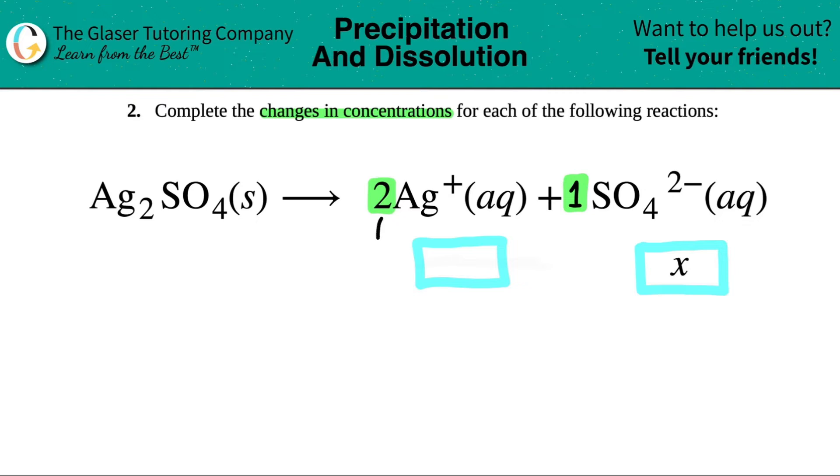But for the Ag, since it's a two to one ratio, the Ag is going to change two times as much as the sulfate. So this would have to be 2X, because the variables have to match. And then you just stick that coefficient number right in front. So whatever change the sulfate is going to go under, the Ag is going to change twice as much, 2X.